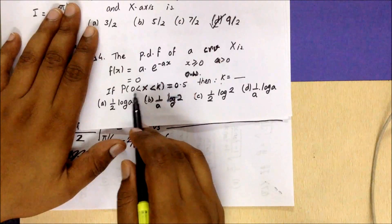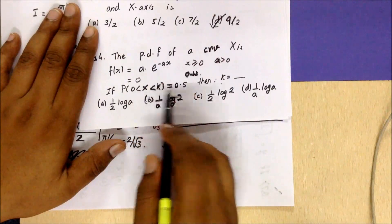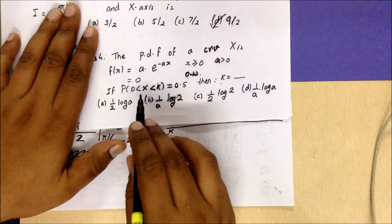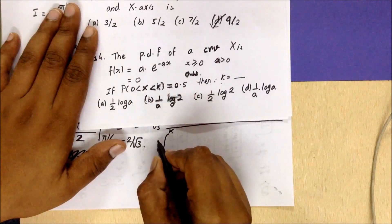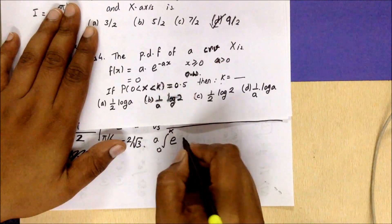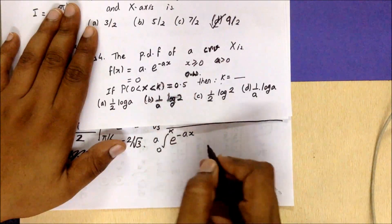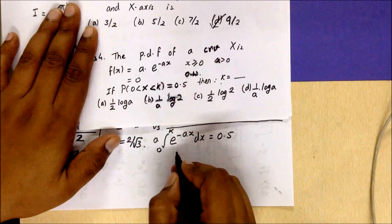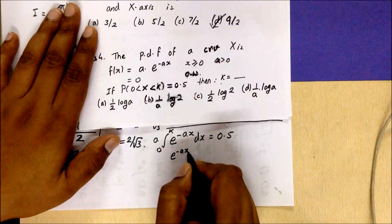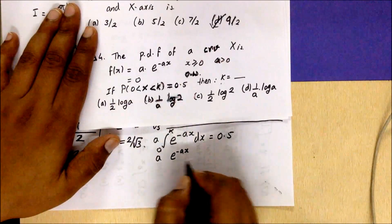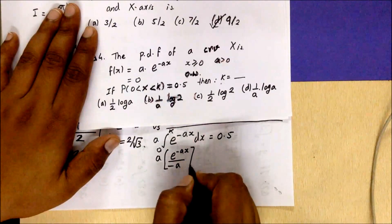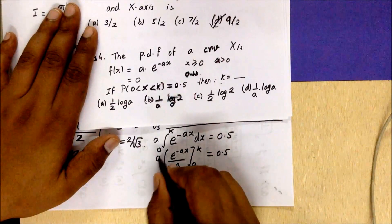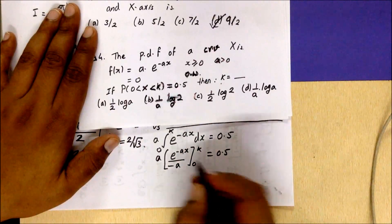Since P(0 < x < k) = 0.5, we take the integral from 0 to k of f(x) dx. Our f(x) = a·e^(−ax). Since a is constant it can be taken outside, giving a·∫e^(−ax) dx = 0.5. The integration of e^(−ax) is e^(−ax)/(−a). So we have a/(−a) times [e^(−ax)] from 0 to k = 0.5. The a cancels, leaving a minus sign.